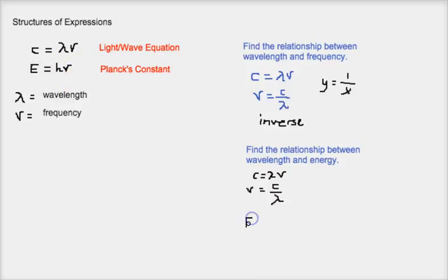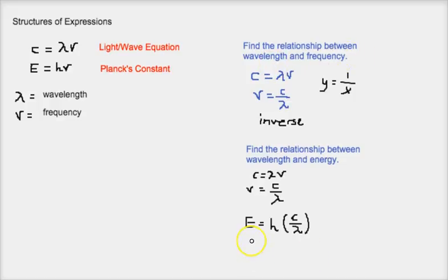And now we can substitute frequency nu into this equation. So E equals h, and now we're substituting this for frequency, c over lambda. The relationship between wavelength and energy is just like the relationship between wavelength and frequency. So we can write this as also an inverse relationship.